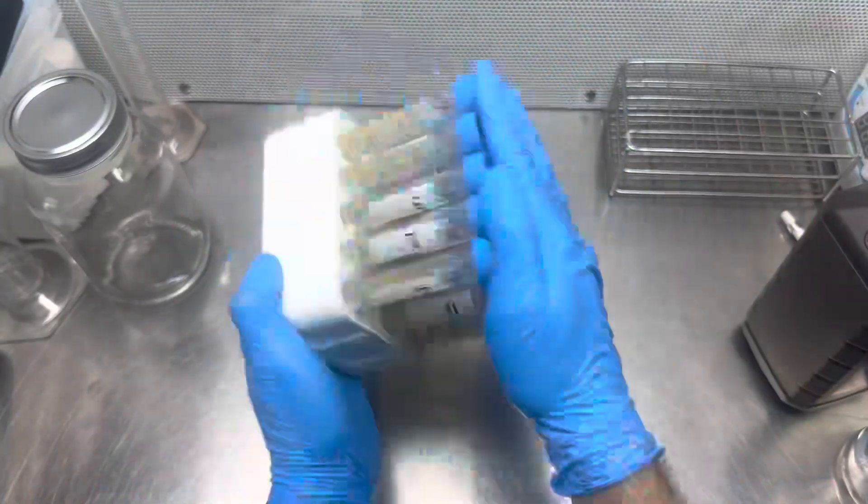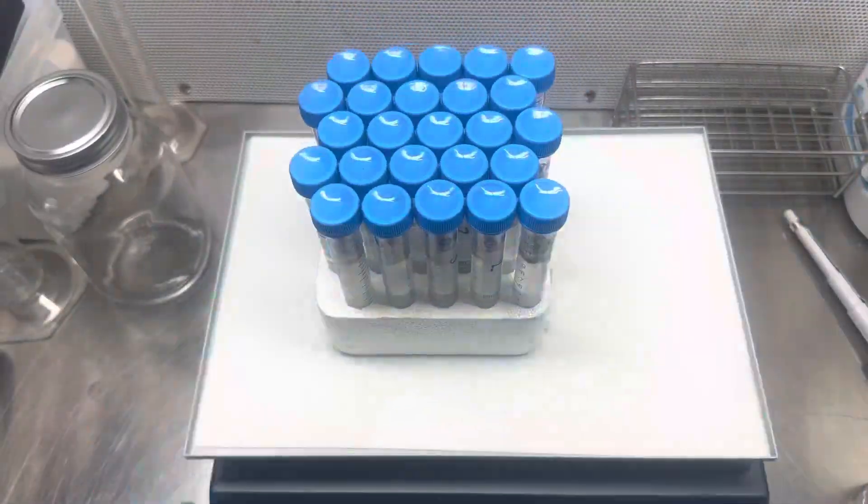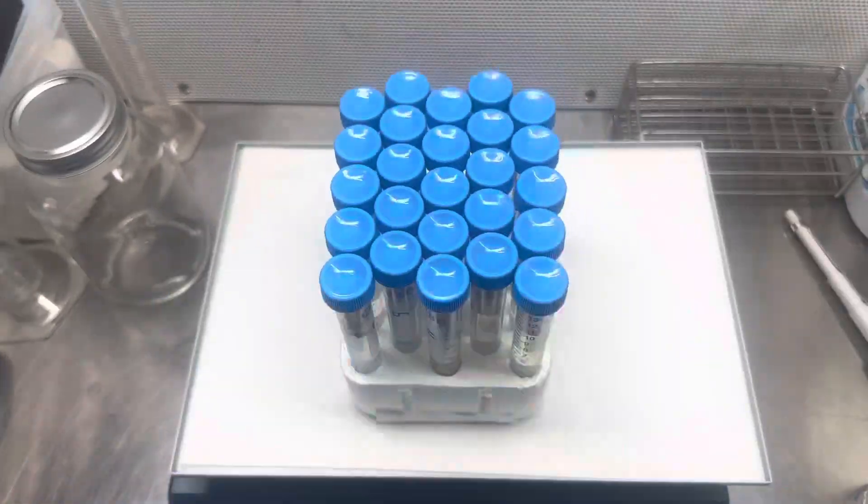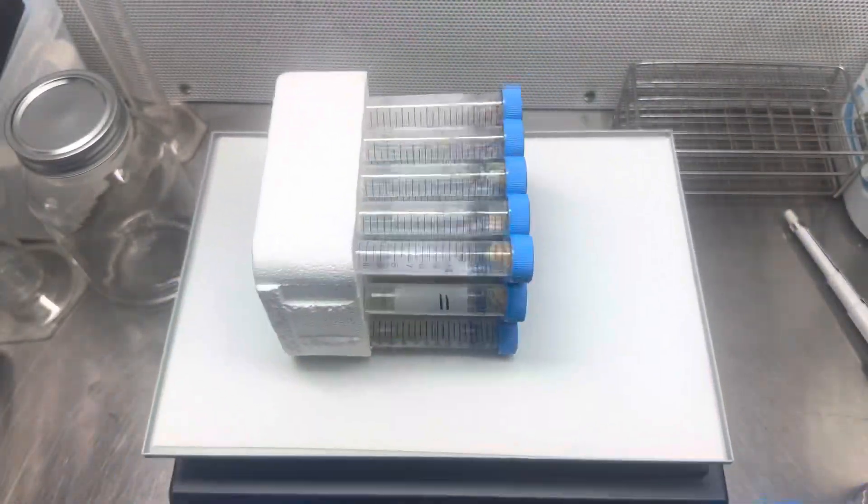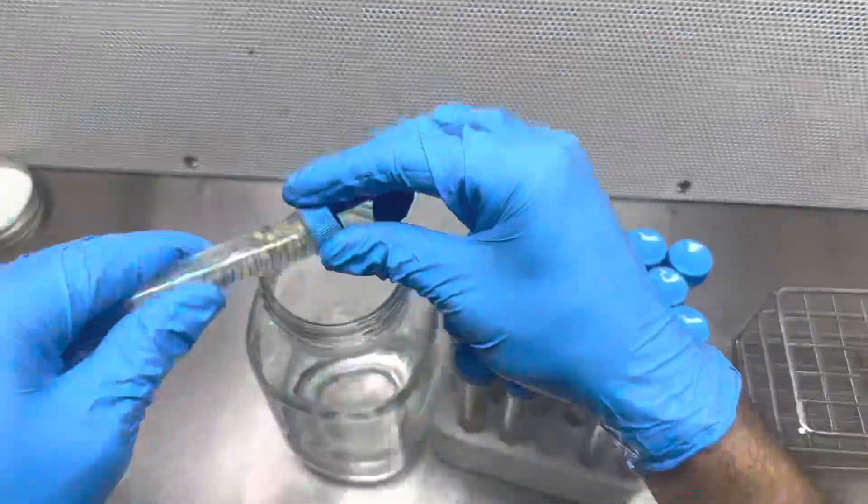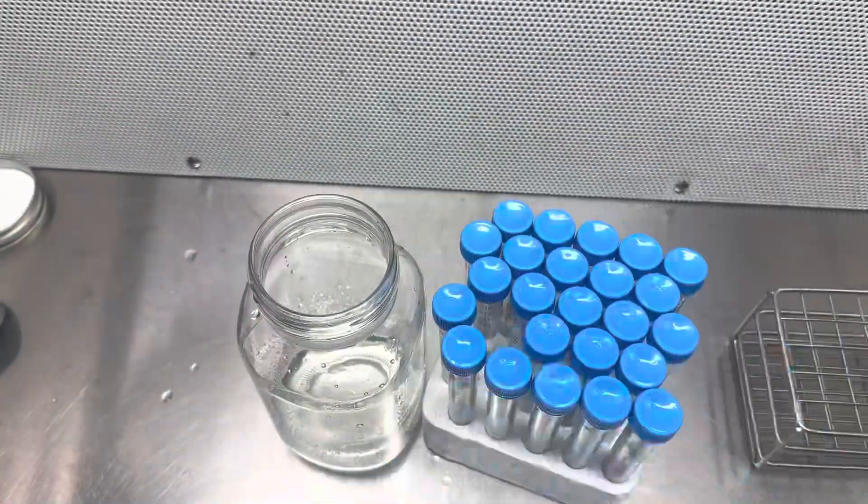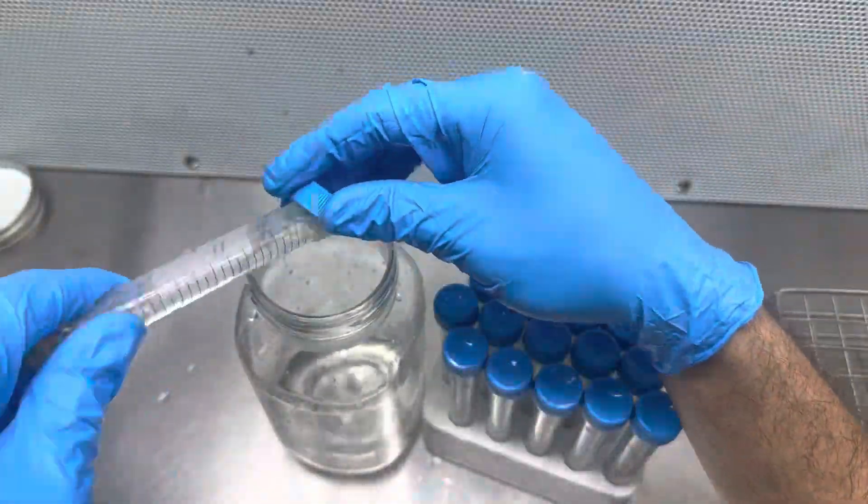The metric system makes the calculations very easy. However, if you want to use freedom units, then it is one tablespoon of hydrogen peroxide, 9.5 ounces of distilled water, and one quarter of a teaspoon of sugar.